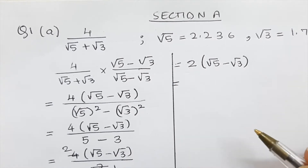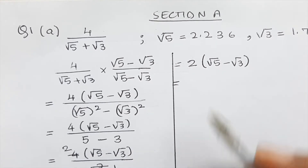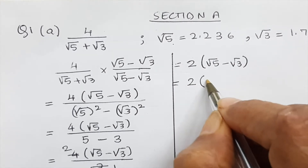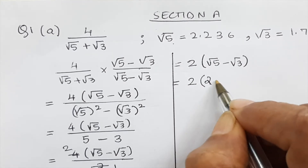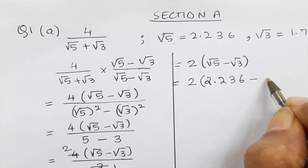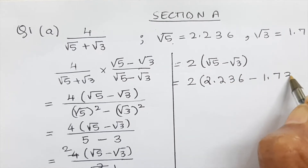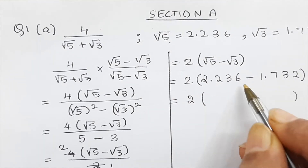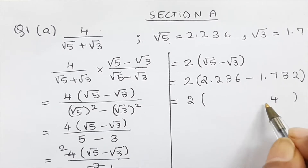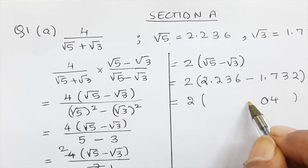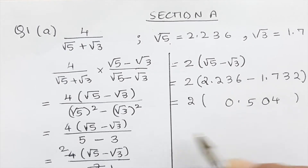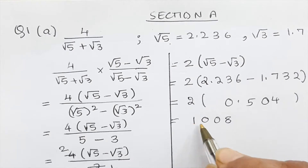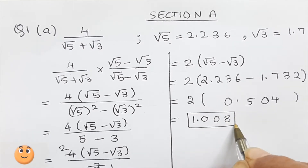That expression is the answer if values were not given, but since they are provided: 2 into (√5 − √3) = 2 into (2.236 − 1.732) = 2 into 0.504. This gives us the final numerical answer.